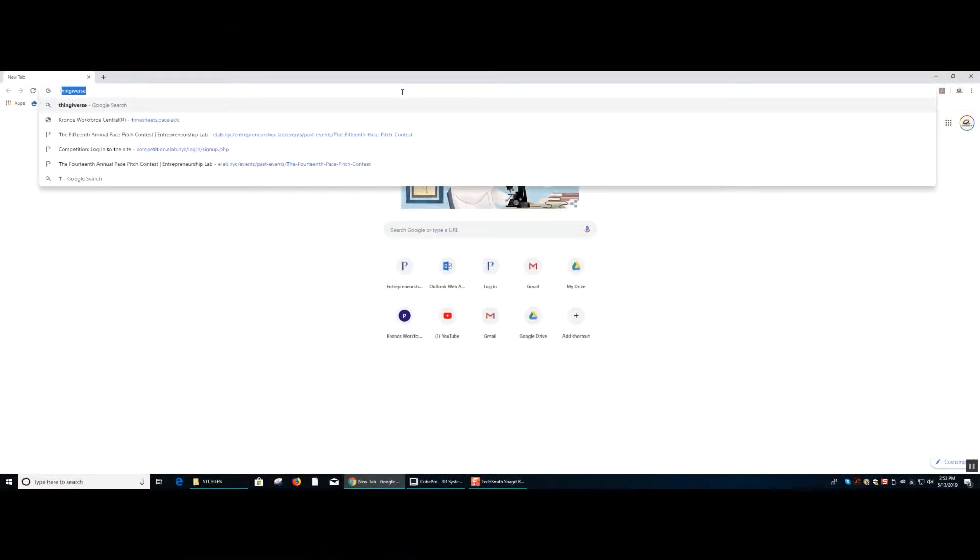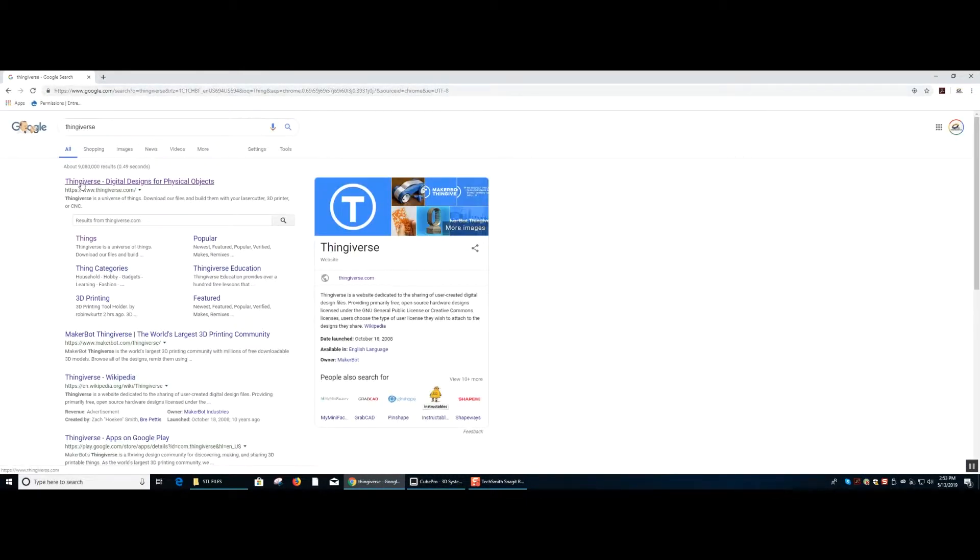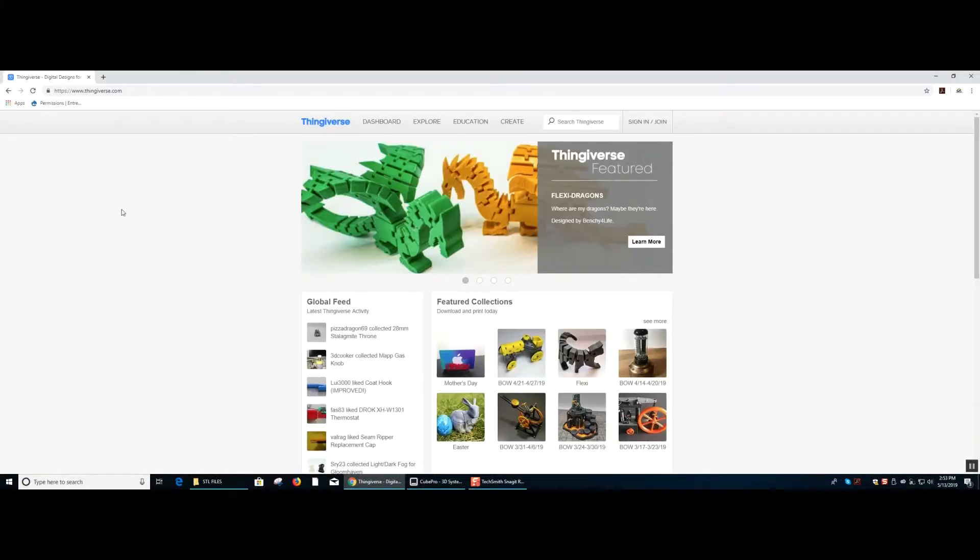The first step is opening the Safari or browser and going to a website that offers free STL files. A recommendation is the website Thingiverse which has a whole catalog of popular 3D printed models that are easily ready to download and print.